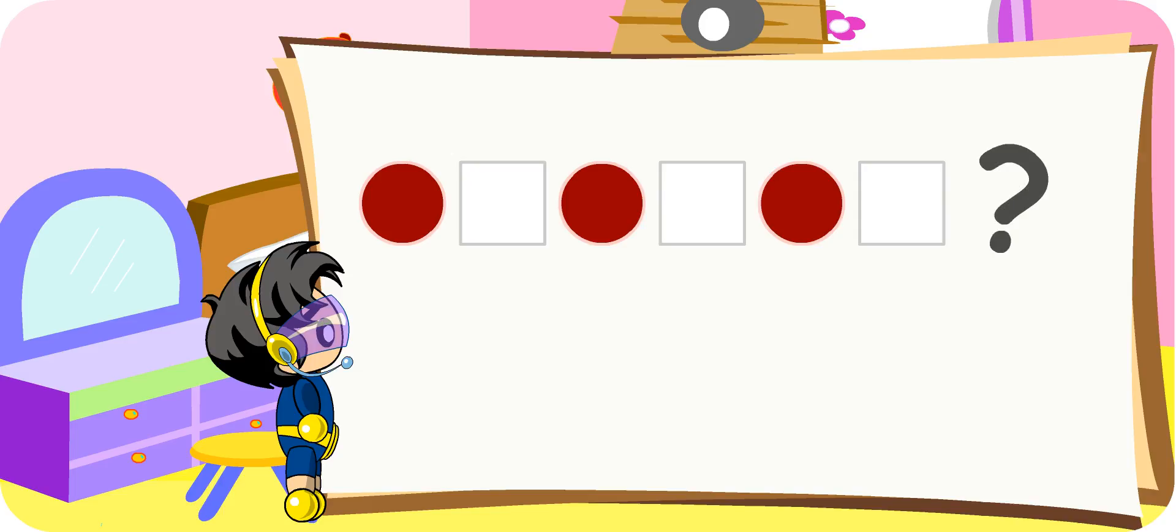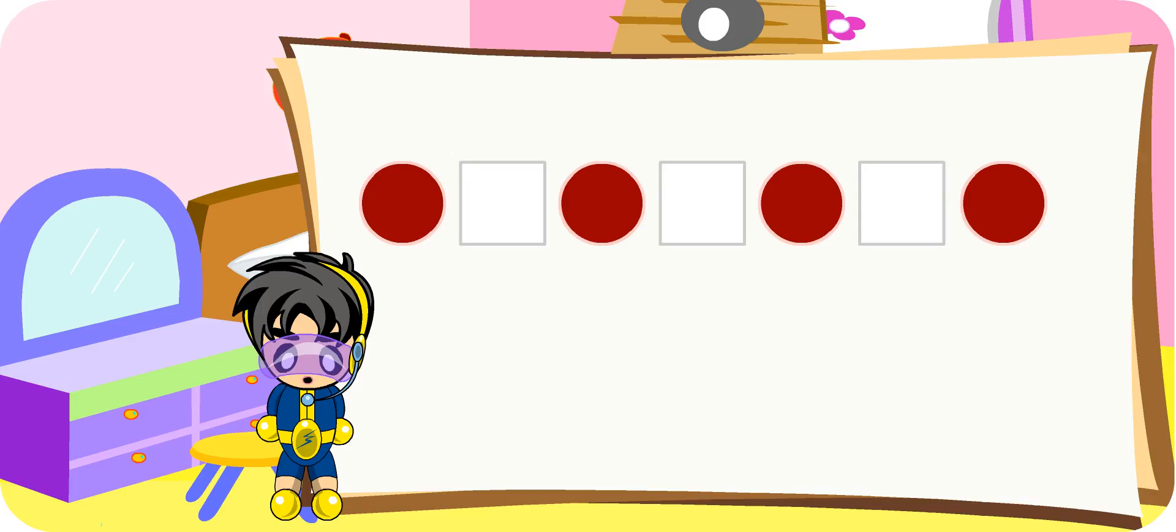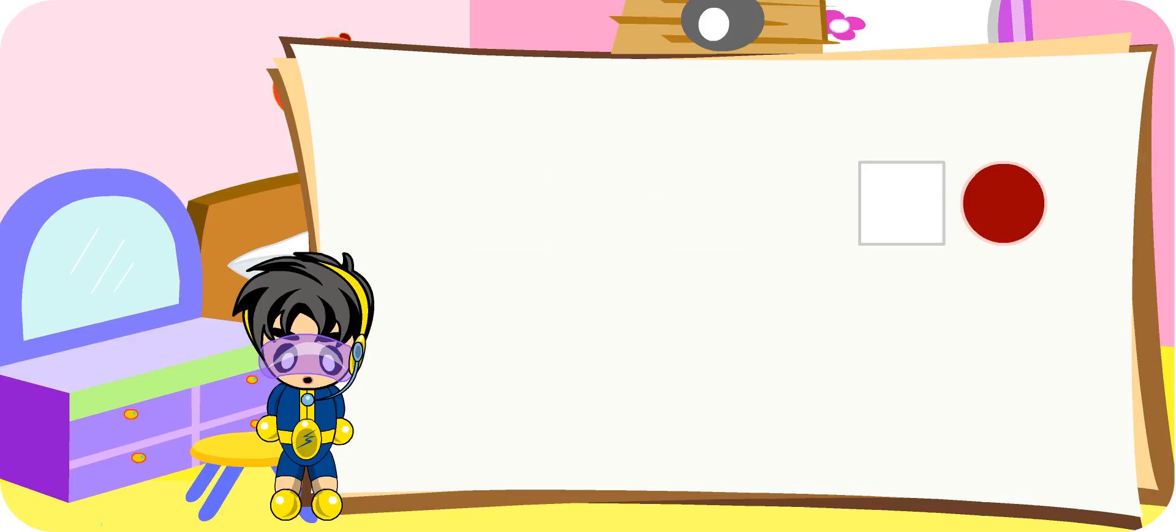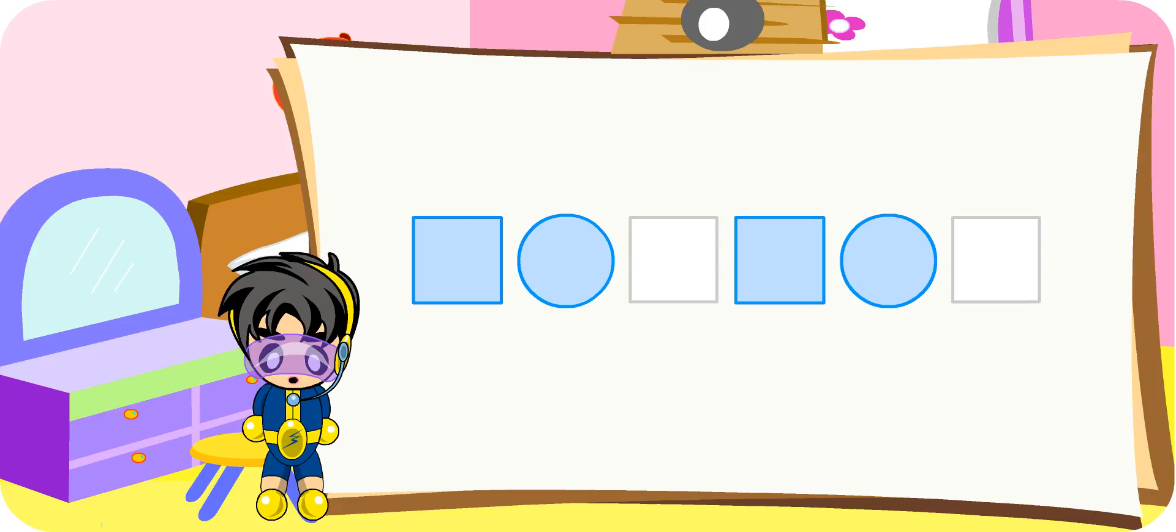Now, can you tell me the next one? It is a red circle. Good. Try the next one. What is the next shape and what is its color? It should be a white square. Very good, Turbo Boy.